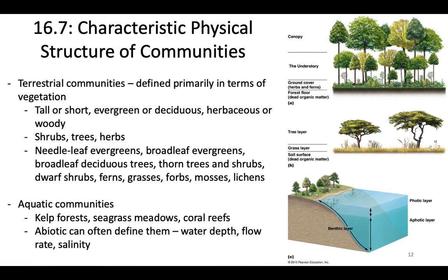Let's talk about the physical structure of communities. Terrestrial communities are generally defined by the vegetation they have: is it a tall tree or short grass, evergreen or deciduous, woody or brush type? You can classify them by shrubs, trees, herbs, different types of evergreens, moss, and lichens. Communities are generally not defined by the animals that live there but rather the plants, because the plants can't move after they become full grown.